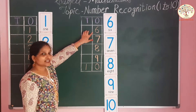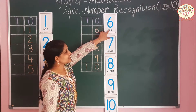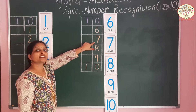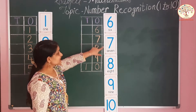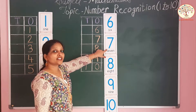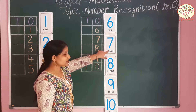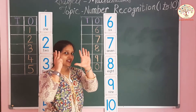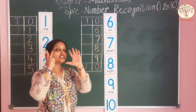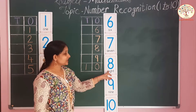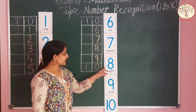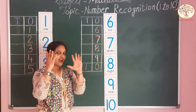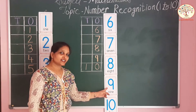After number 5, what comes? Number 6. After number 6 comes number 7. After number 7 comes number 8. After number 8 comes number 9.